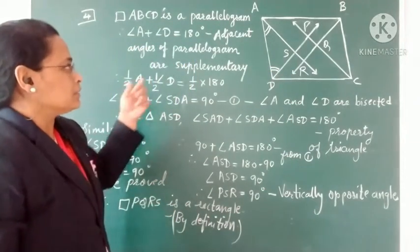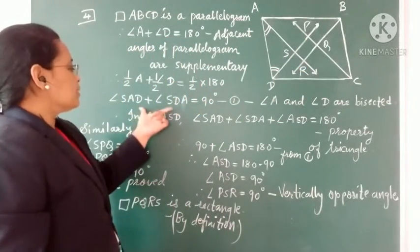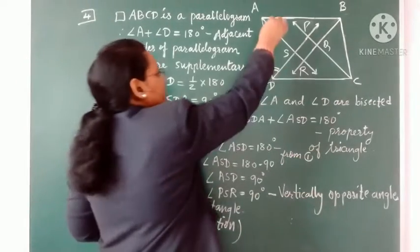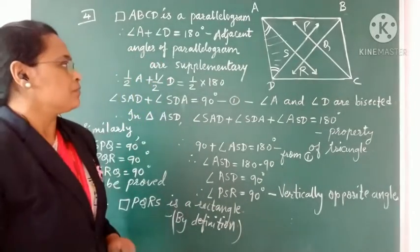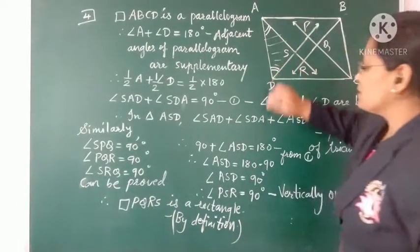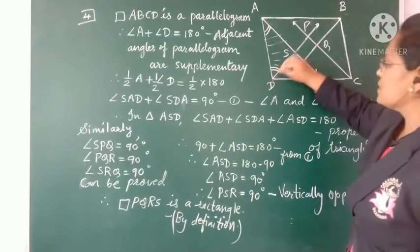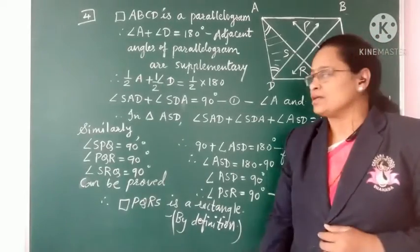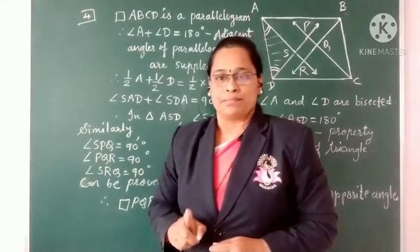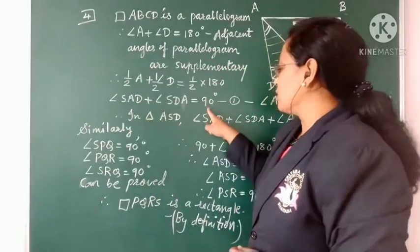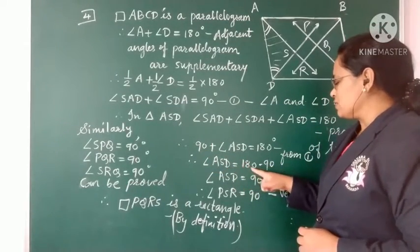Because angle A is bisected by ray AR and angle D is bisected by ray DP, we use these half-angles in triangle ASD. By the property of triangles, the sum of three angles is 180°. So angle SAD + angle SDA + angle ASD = 180°. Since angle SAD + angle SDA = 90°, substituting gives angle ASD = 90°.